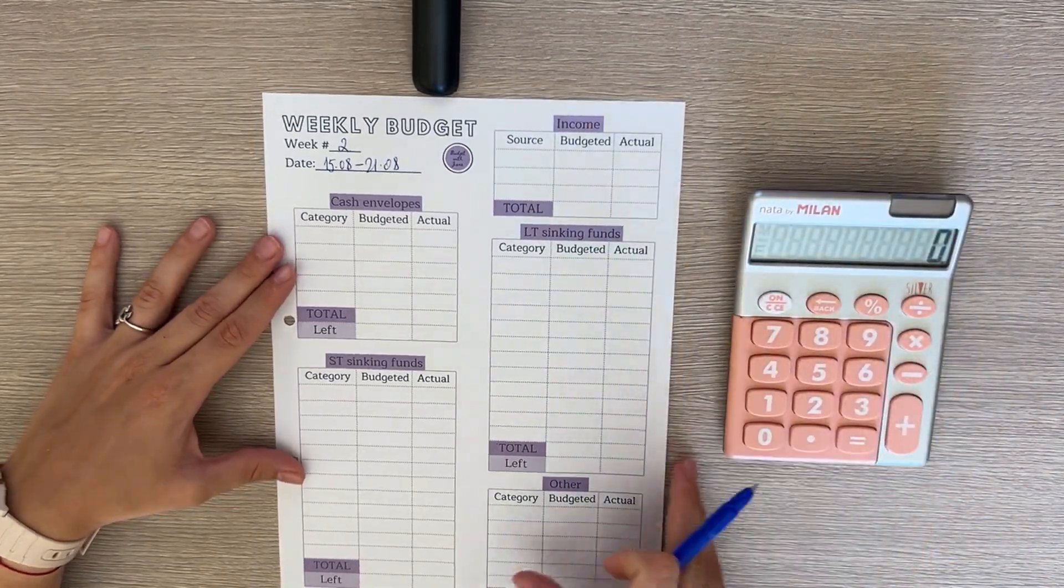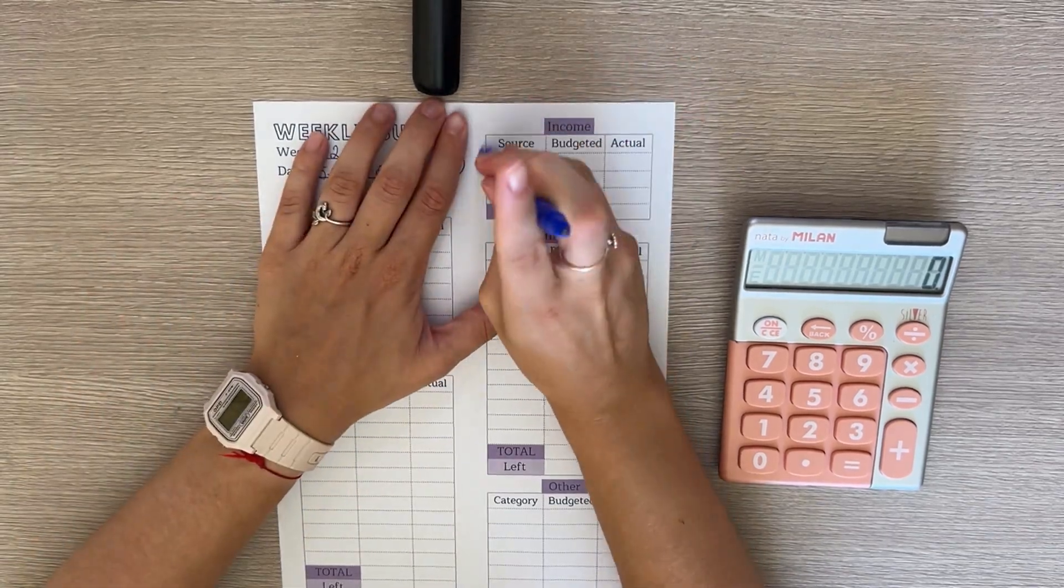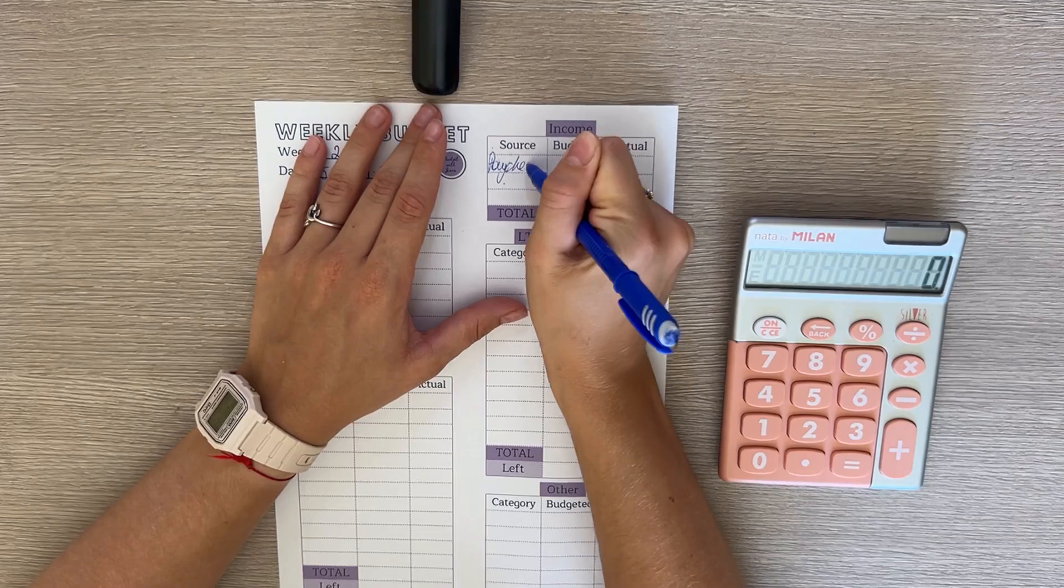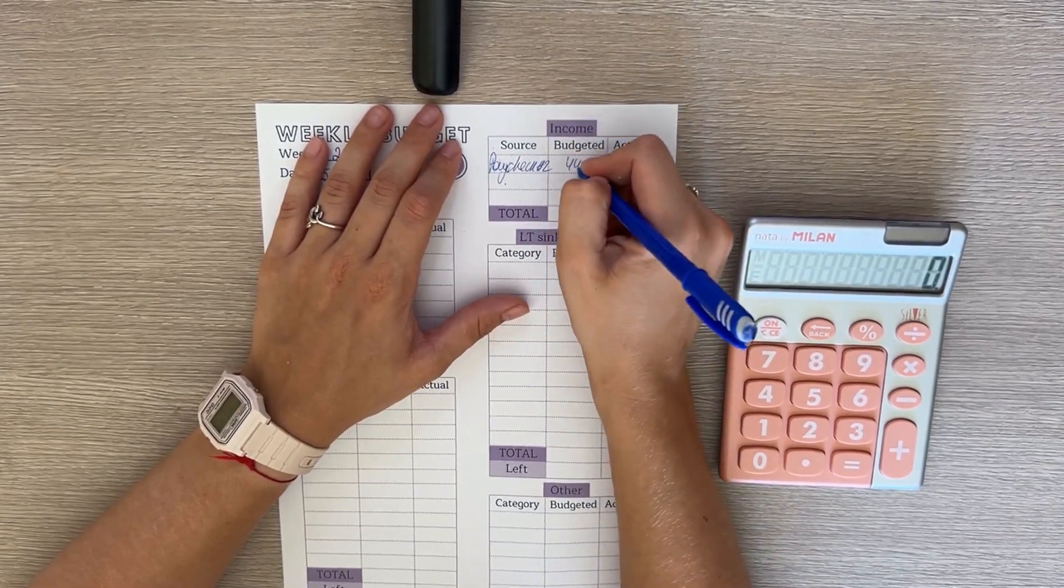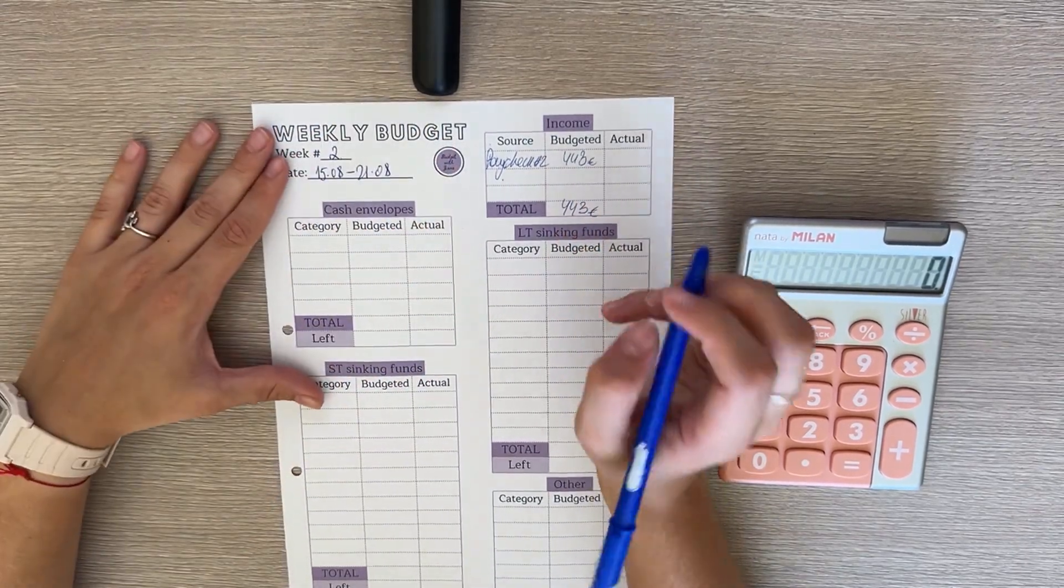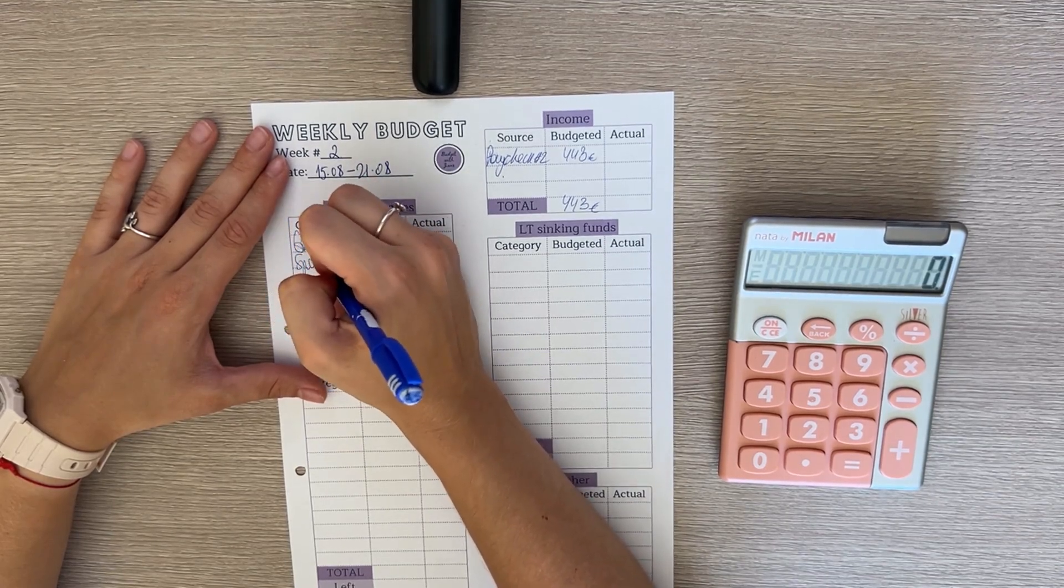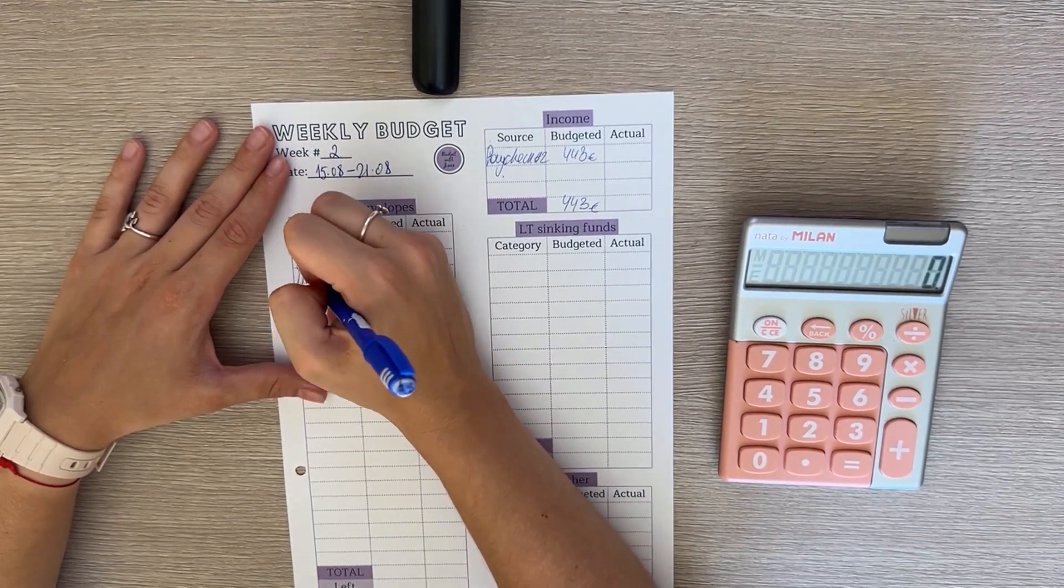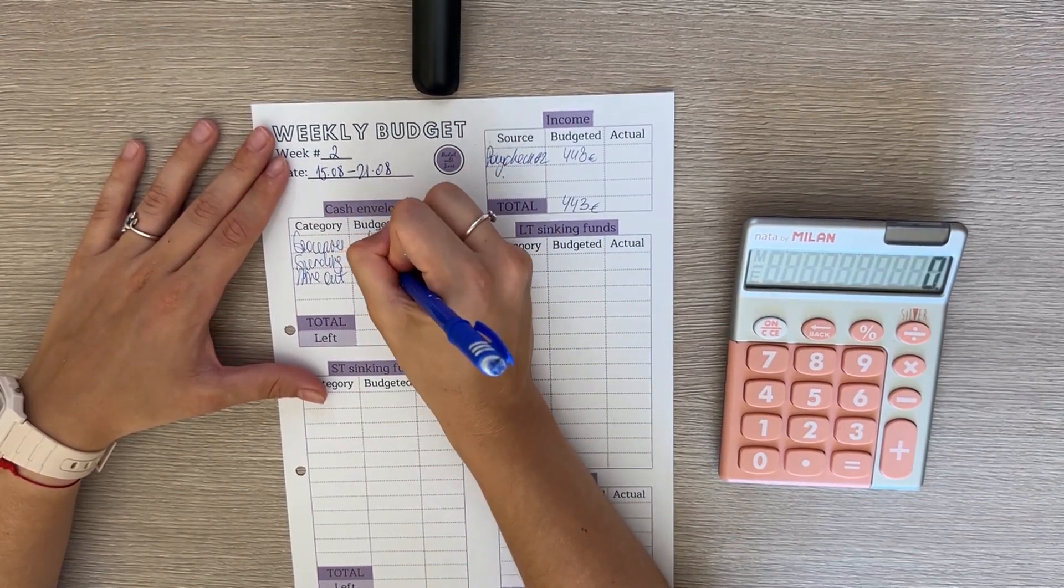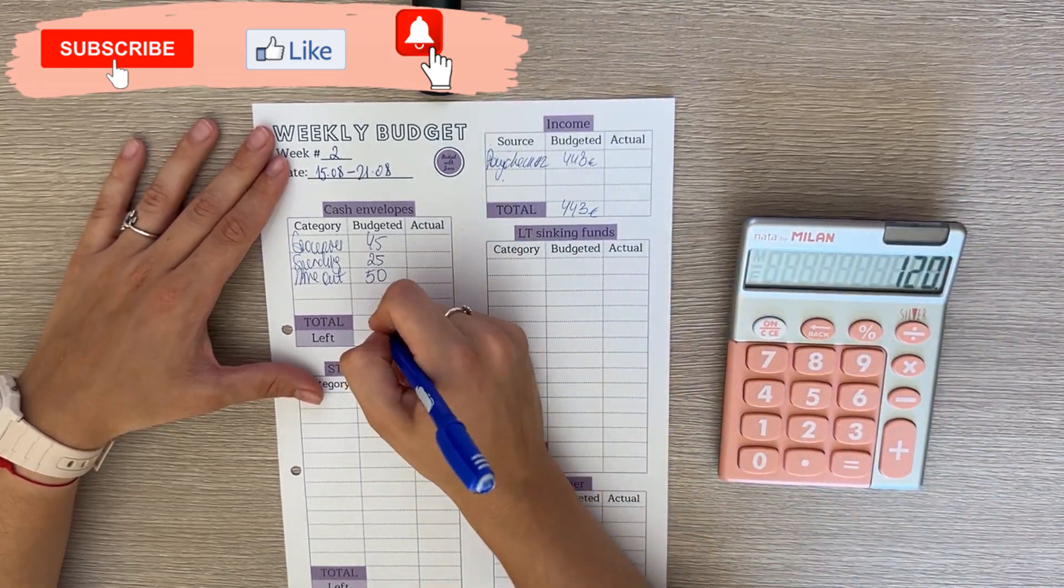Let's set up our weekly budget number 2. I will take this off so I have more work space to work with. Our paycheck number 2 is going to be 443 euros. This is already in my account so I know that it's there. So our cash envelopes: groceries will be getting 45, spending is going to get 25, and dine out is 50. So in total that's 120, which means we have 323 left to budget.